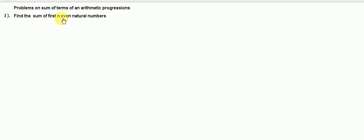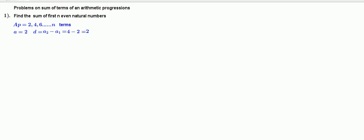First question: find the sum of first n even natural numbers. Let us list the even natural numbers, that is 2, 4, 6, and so on up to n terms. Therefore, first term a is equal to 2, common difference d equal to a2 minus a1, that is 4 minus 2, so d is equal to 2. We have to calculate the sum of n even natural numbers, that is Sn.